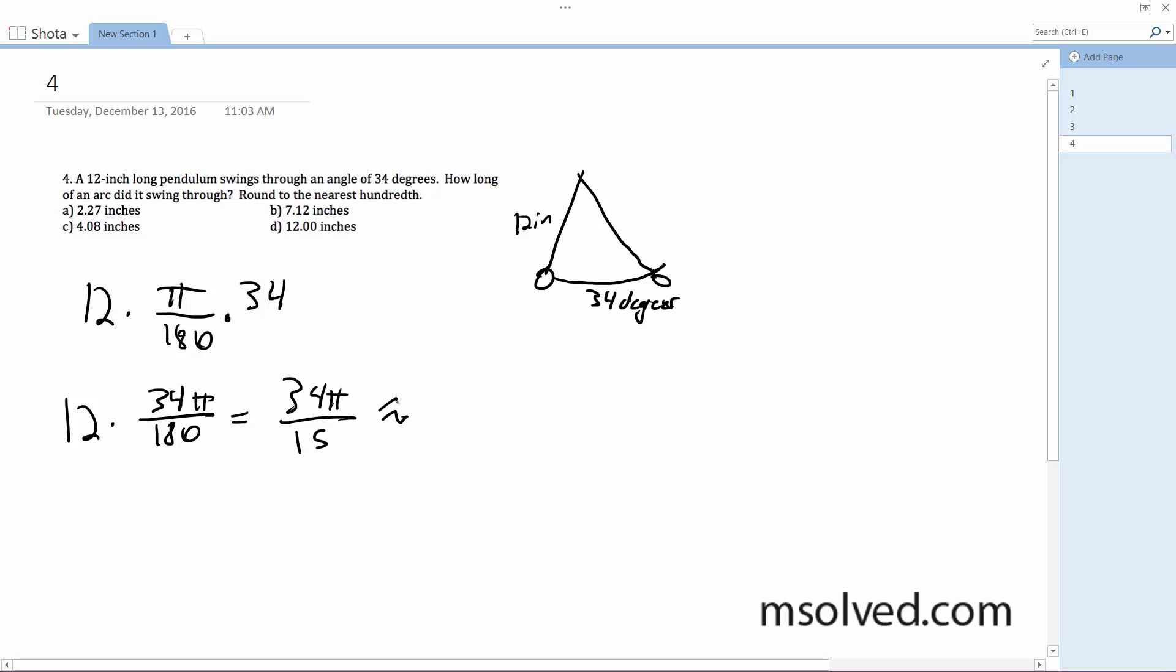But we want inches within the nearest hundredth. So this rounds to 7.12094, but that's just to the nearest hundredth of 7.12 inches.